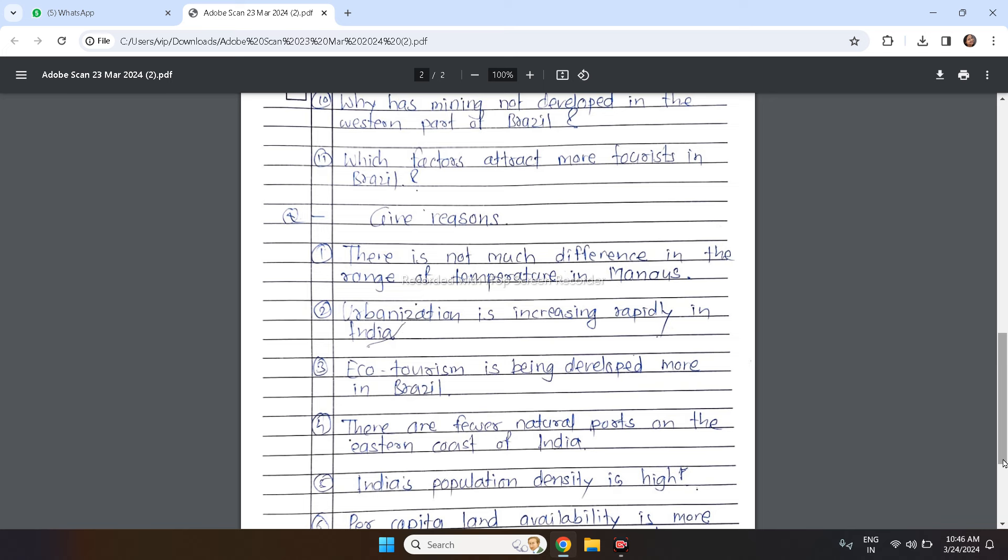So Western Himalaya, Punjab Haryana plain, Thar Desert, Western Coastal Plains, Eastern Coastal Plains, Western Ghats, these are some questions. Mark the following on the given outline map of India. Sikkim, river Narmada, cold desert, Eastern Ghats, Kaveri river, these are some questions.